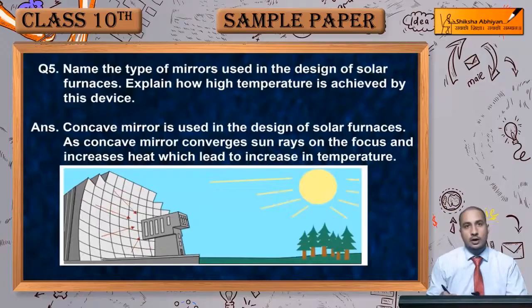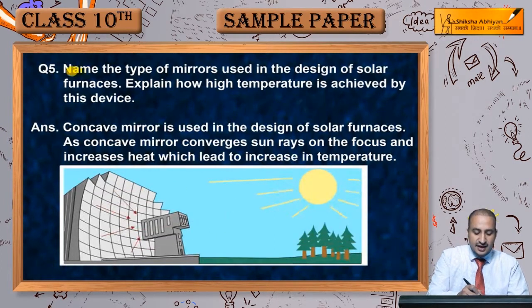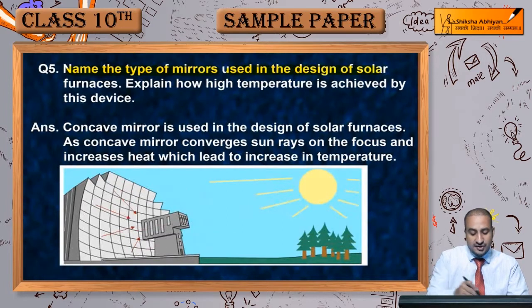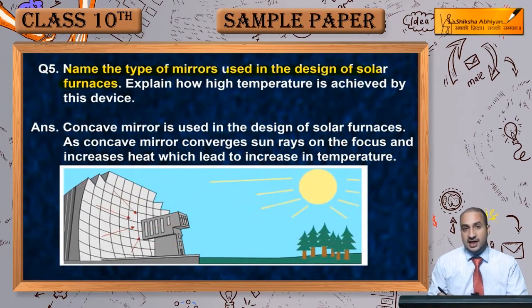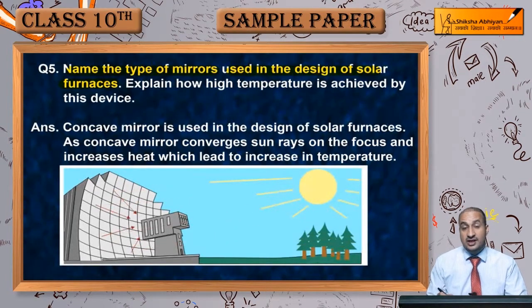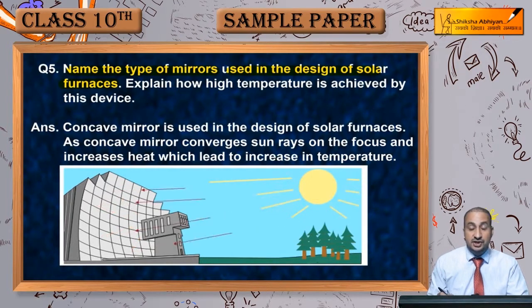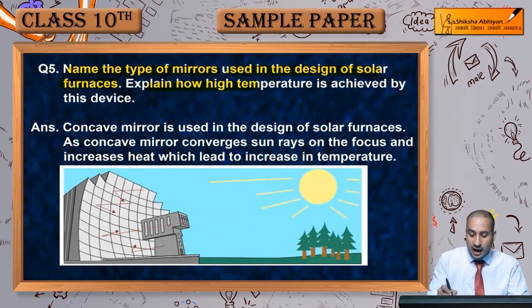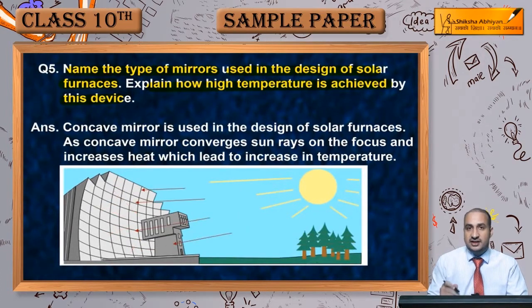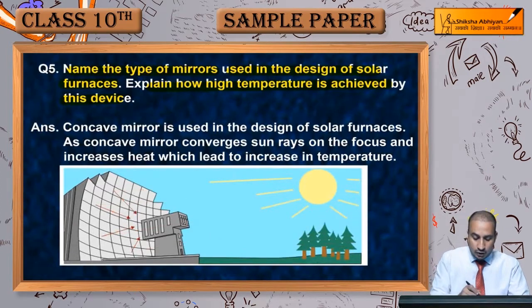Question 5: Name the type of mirrors used in the design of solar furnaces. Solar furnace mein kis type ke mirror ko use kiya jata hai? Solar furnace ek aisi furnace hoti hai jahan solar energy ko heat energy mein convert karte hain. Explain how high temperature is achieved by this device — solar furnace se kitna temperature achieve kiya ja sakta hai?